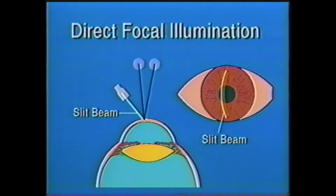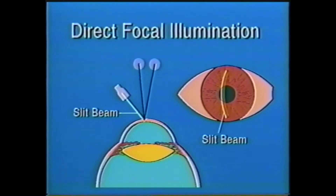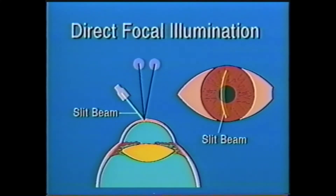Two, direct or focal illumination. This makes use of the hairline slit beam. The microscope and slit beam are directly in focus on the object being examined. This is particularly suited to depth localization and shows that this corneal abrasion is very superficial.